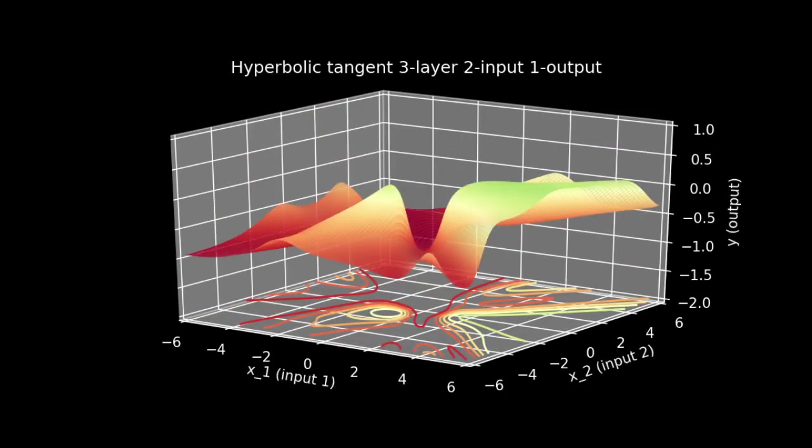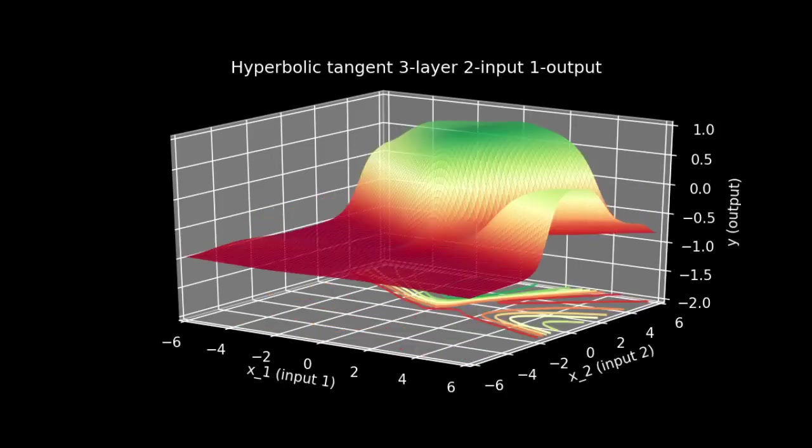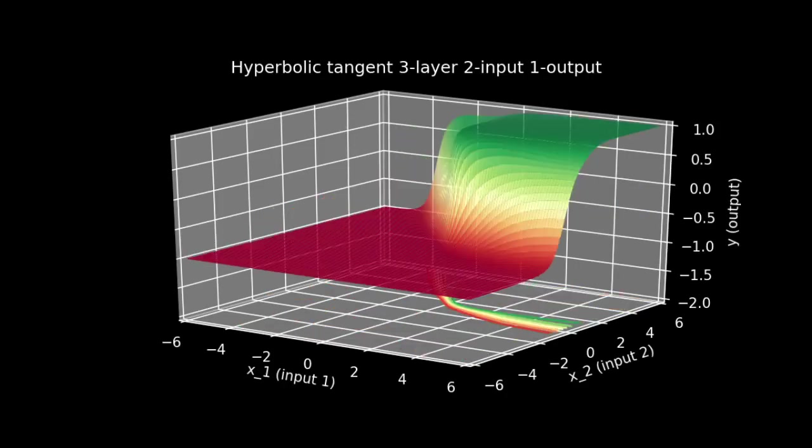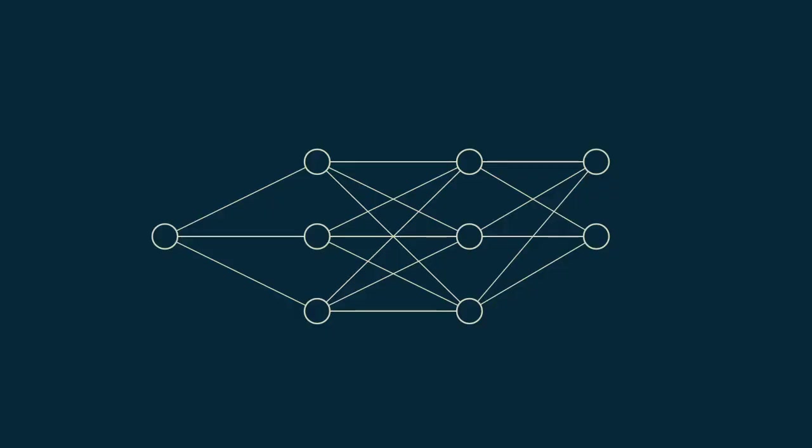However, aside from these two limitations, the variety of functions that this neural network can produce is a little mind boggling. We modified a single output neural network to be a classifier when we looked at the multilayer perceptron. Now there's another way to do this. We can use a two output neural network instead.